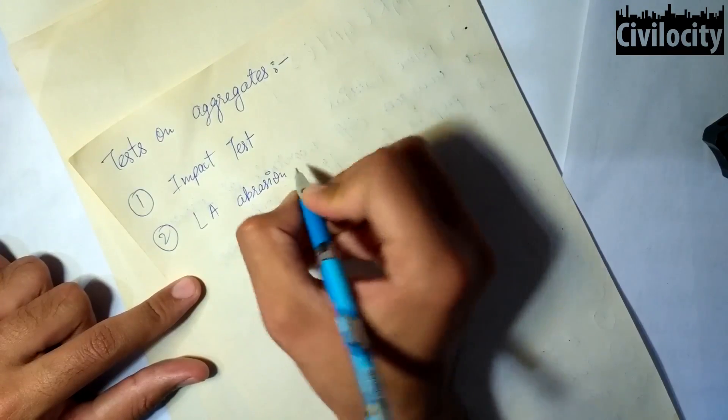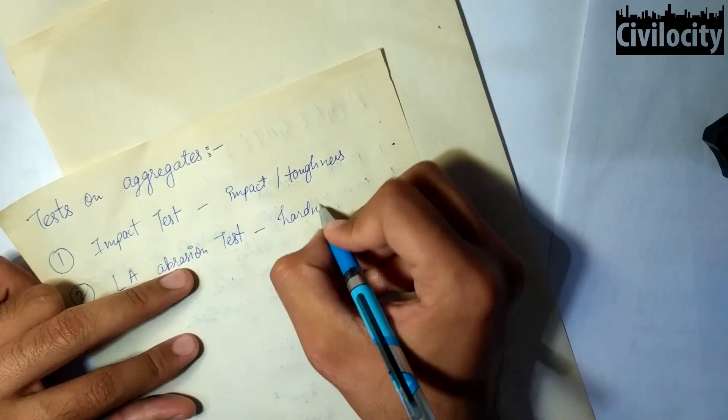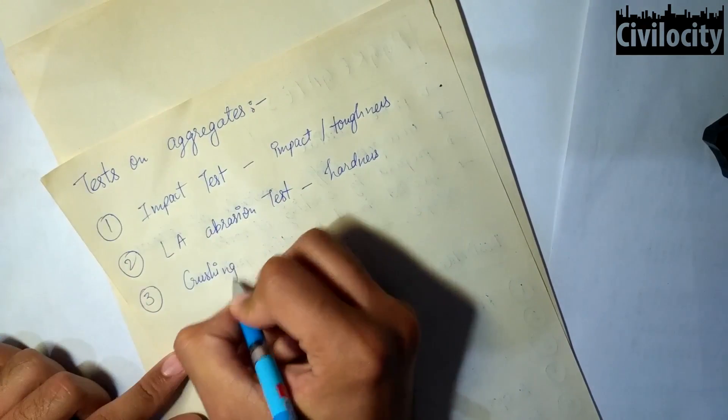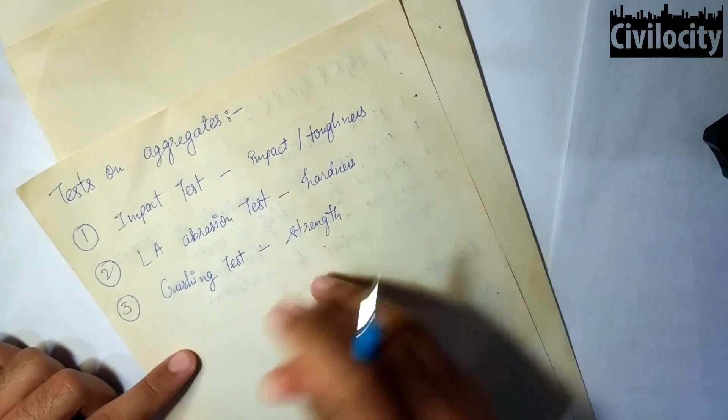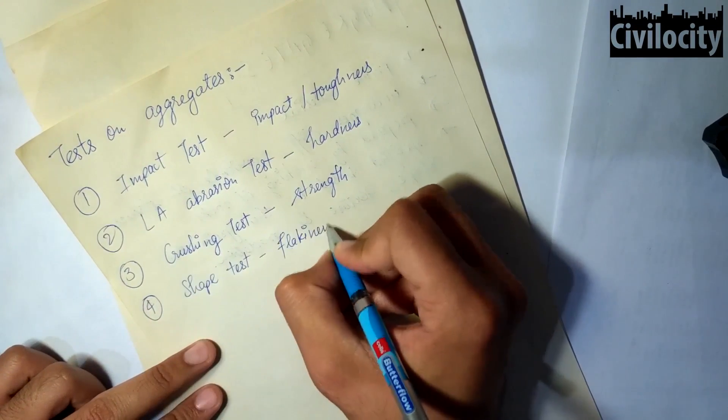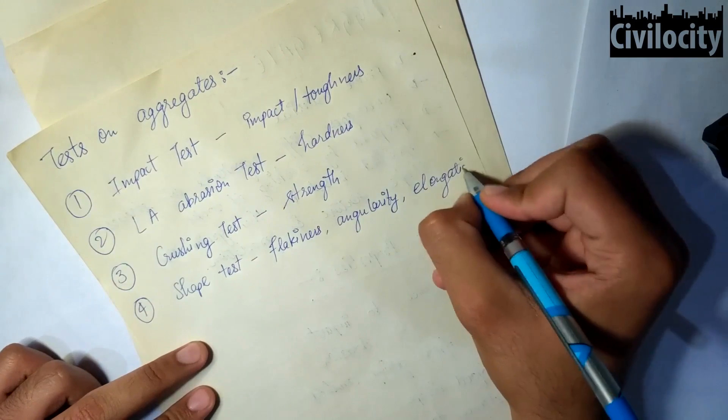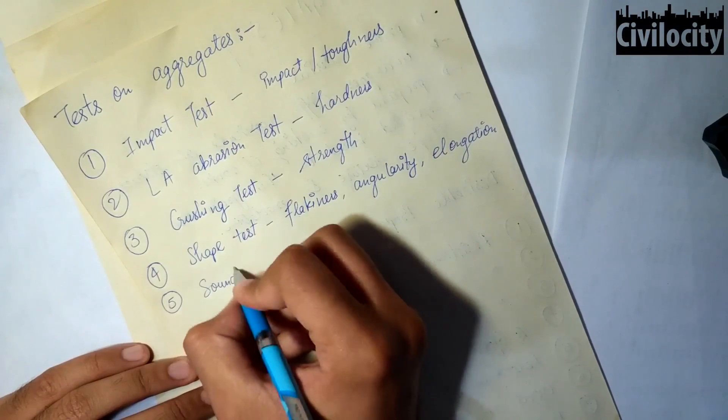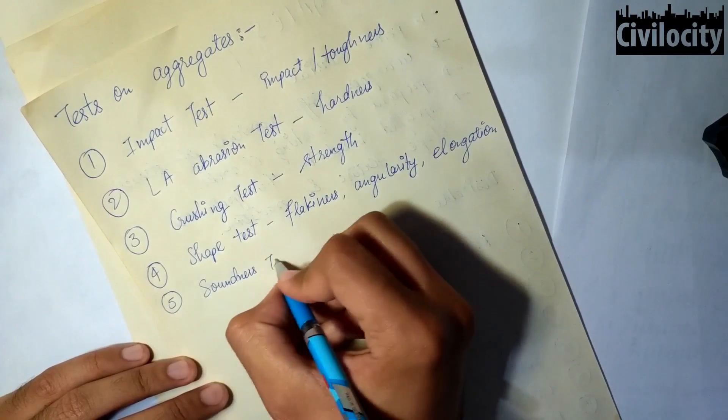The second one is Los Angeles abrasion test which is done to find out the hardness of the aggregates. The third one is the crushing test to find out the strength of the aggregates. The fourth one is the shape test to find out the flakiness, angularity and elongation index of aggregates. The fifth one is the soundness test to find out durability of aggregates.